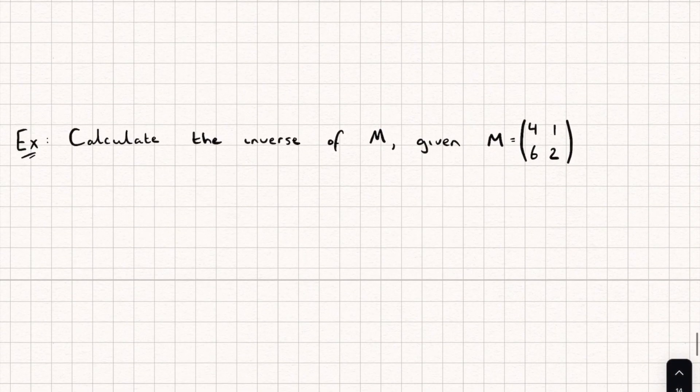So, let's now take a look at actually calculating this. You can see here, I have a matrix M, and I want to find its inverse. So, the first thing I'm going to do is find the determinant.